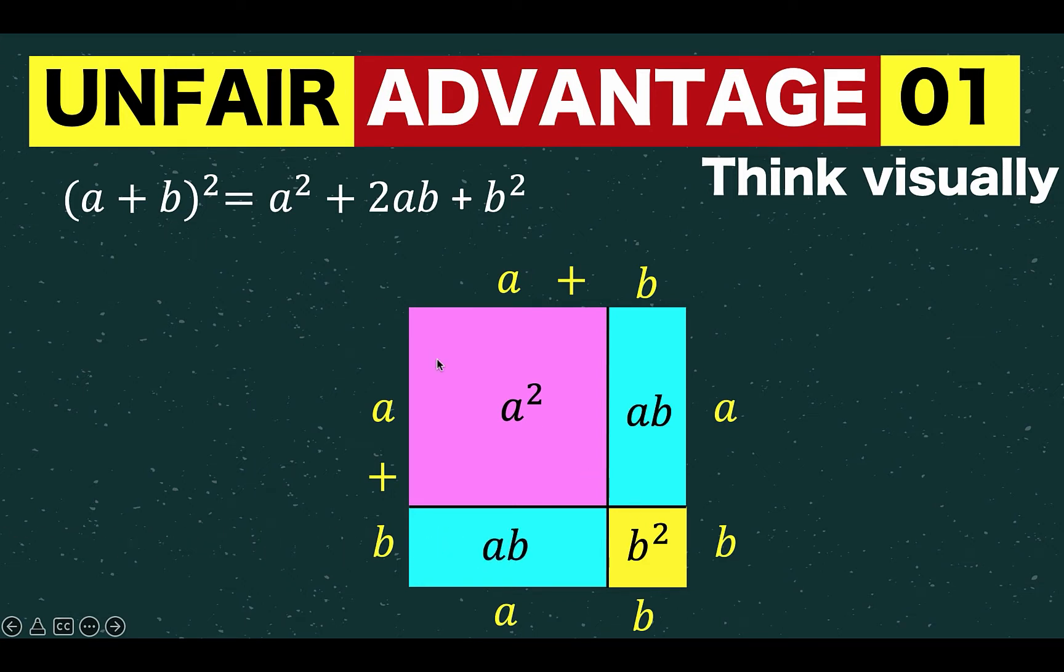So connecting that with our formula, this exponent 2 which we read as squared means you have a square. And the square has a side length of a plus b, which is now this a plus b here, a plus b here. That is equal to these four distinct parts.